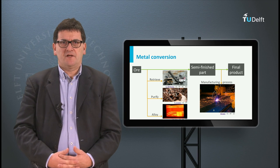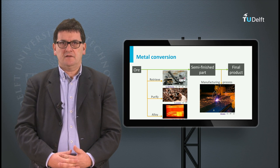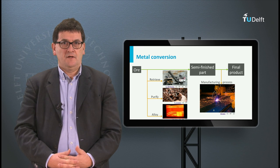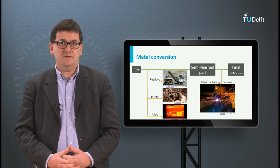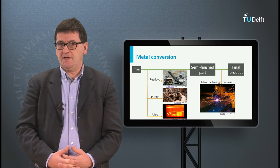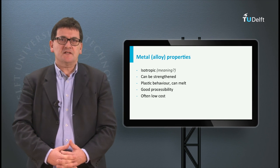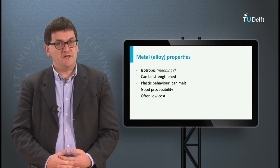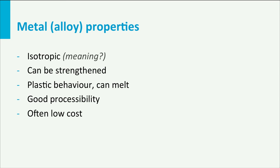Metals and their alloys have a number of attractive properties. Most metals can be treated as isotropic — that means the properties are independent from the directions in which the material is tested. Also, metals can be strengthened: by adding alloying elements, the strength can be increased.